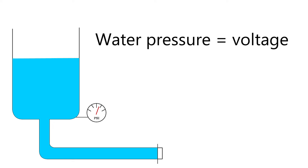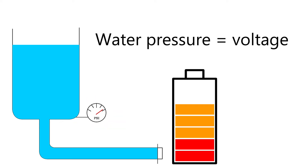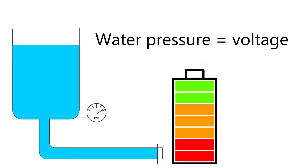Adding more water to the tank increases the water pressure, meaning the water is now trying harder to get out of the tank. In the same way, adding more charge to a battery increases the battery voltage, meaning the electricity is now trying even harder to get from the positive to the negative. So that's voltage — it's just like water pressure.